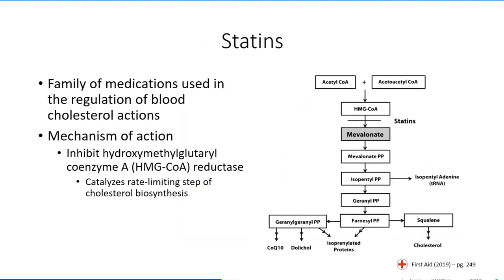In the case of a suspected toxic myopathy, a thorough patient history is critical in reaching a proper diagnosis. Without question, the most prevalent form of toxic myopathy is related to statin prescriptions — a family of medications commonly prescribed for the regulation of blood cholesterol. The therapeutic mechanism of action is inhibition of hydroxymethylglutaryl-CoA, abbreviated HMG-CoA, reductase, which catalyzes the rate-limiting step of cholesterol biosynthesis.